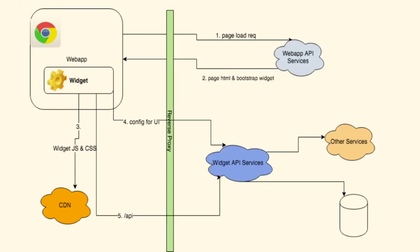The first page load request goes to the web app. It just sends a placeholder for the widget, and the widget then loads the CSS and JS from the CDN. Then it talks to its own services for getting the UI configuration, from which it makes API calls.